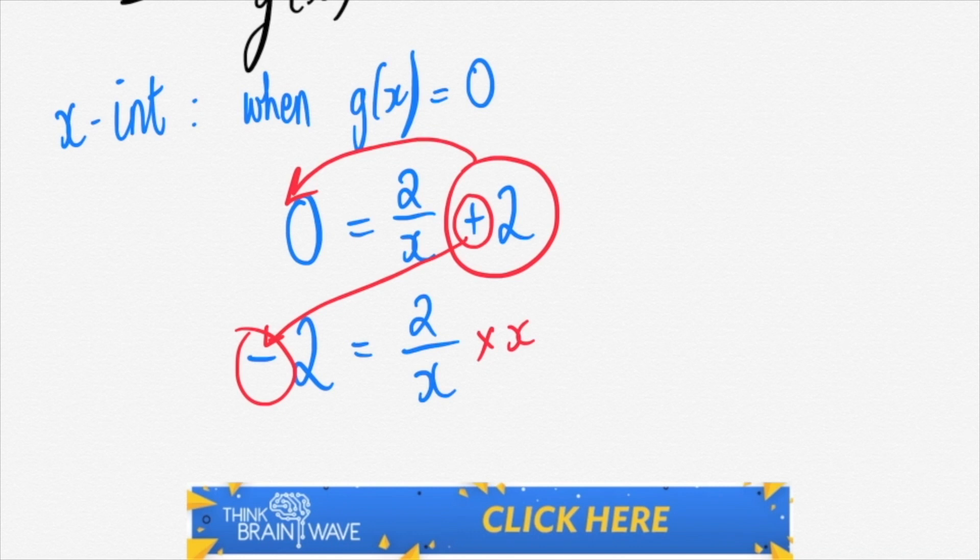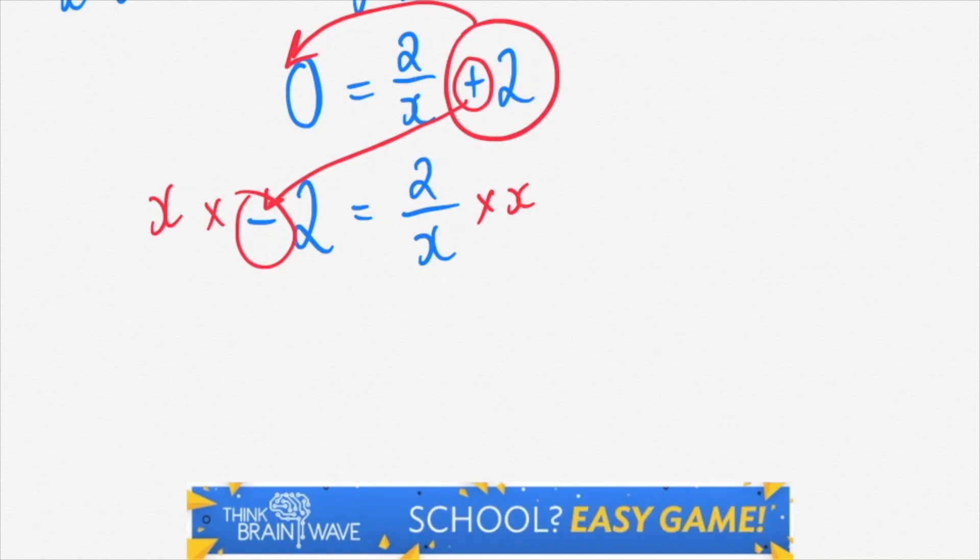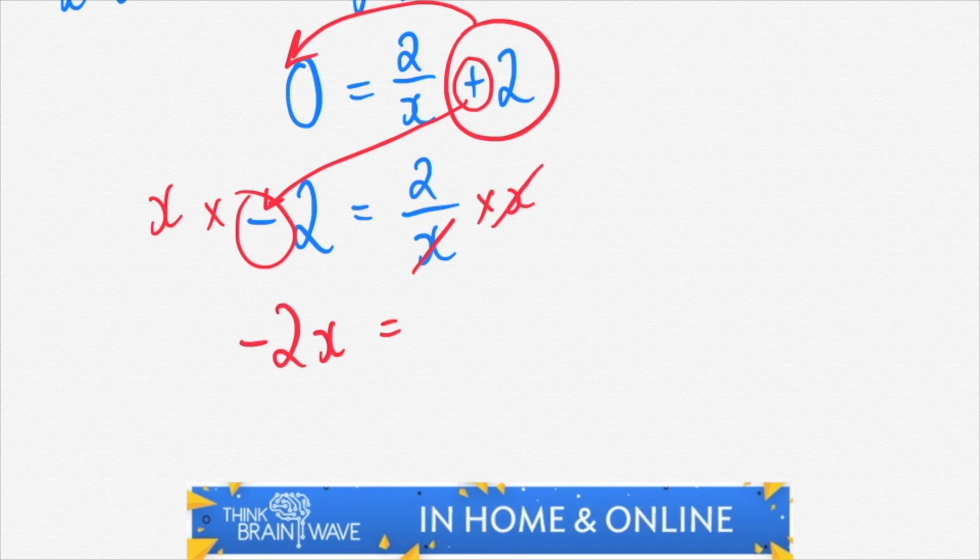We then multiply by x on both sides. This gives us minus 2x is equal to 2 because the x's cancel. Now we divide both sides by minus 2.